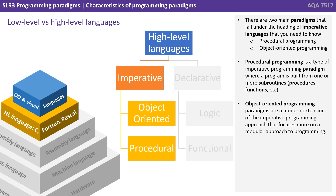There are two main paradigms that fall under the heading of imperative languages that you need to know about. Procedural programming is a type of imperative programming paradigm where a program is built from one or more subroutines, e.g. procedures and functions. Object orientated programming paradigms are a more modern extension of the imperative programming approach that focuses more on a modular approach to programming.